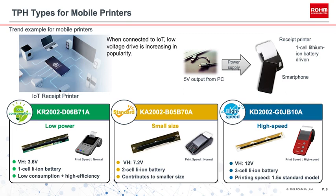We can see three offerings from Roam that cover one-, two-, and three-cell battery applications. The first is the KR2002D06B71A, which features low power consumption supporting operation from a single 3.6-volt lithium-ion battery. The second is the two-cell, 7.2-volt compatible KA2002B05B70A, still used today in most mobile printer designs. The third is the three-cell type KD2002G0JB10A, operating at 12 volts to achieve high-speed printing.